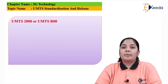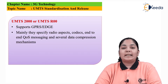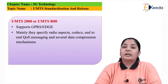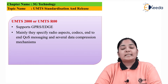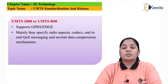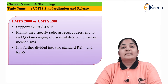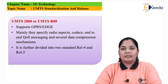The next release, UMTS-2000 or R00, was done to support HSDPA as well as GPRS. Mainly they provided radio aspects, that is enhanced radio features. They also provided end-to-end quality of service messaging, various codecs (coders and decoders), and finally several data compression mechanisms.